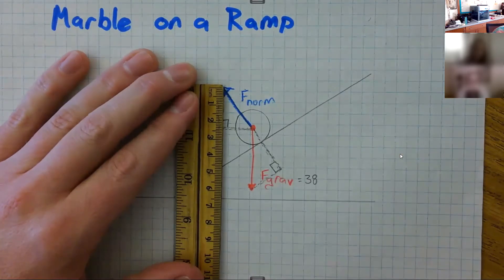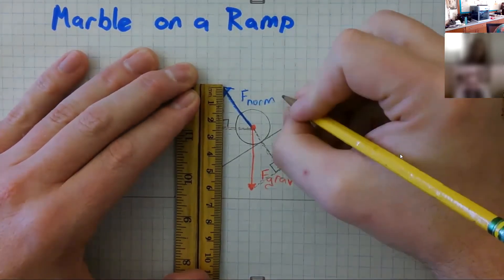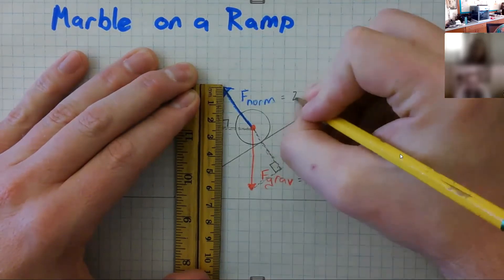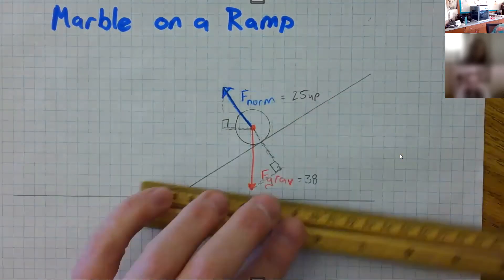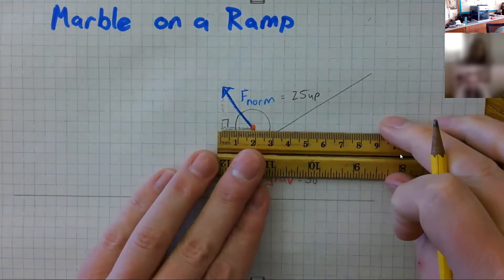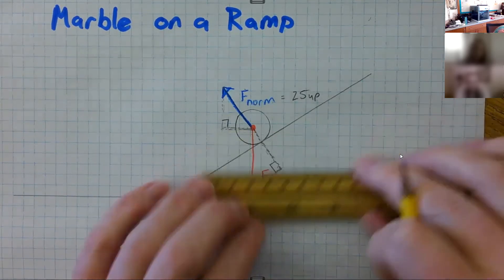So the up and down component, that looks to me like about 25 up. And how much left? About 18 left.